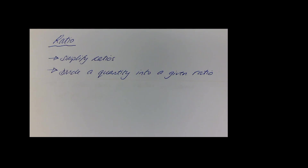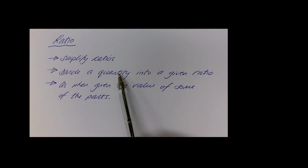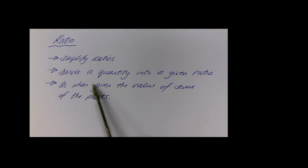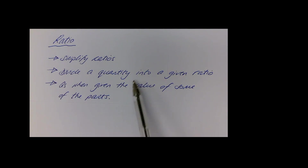In this video we are going to look at ratio. There are three key things you need to be able to do: simplify ratios, divide a quantity into a given ratio, and deal with questions when given the value of just some of the parts. The key thing when you get a question is to identify which one of these it is.